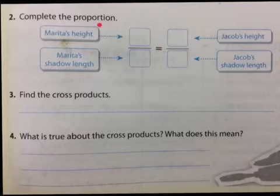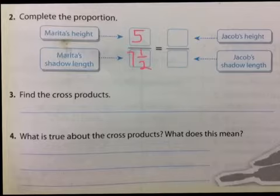Question two, let's complete the proportion. Marita's height, we said that Marita's height is five feet, correct? And Marita's shadow's length is seven and a half. So I'll write a mixed number there, seven and a half. And then we have Jacob's height right here. Jacob's height, we said he was six feet tall and Jacob's shadow casted is nine feet.